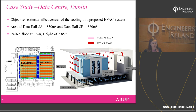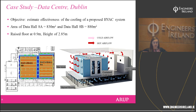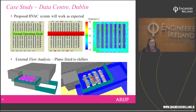A recent project was a data centre in Dublin with two data halls, A and B, of similar size. Typically in data centres there's a raised floor — cold air passes underneath and comes up to cool the computer units, then returns to the cooling unit to be recirculated. That's how data centres are typically cooled.